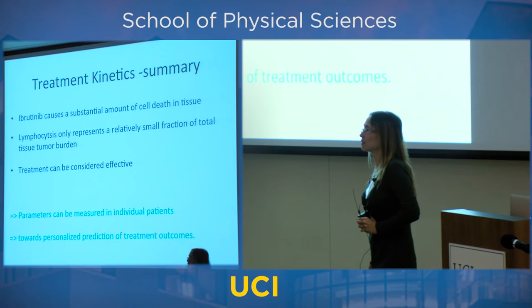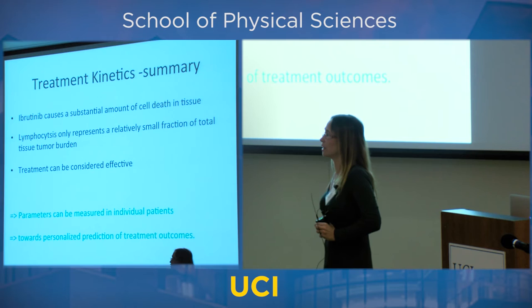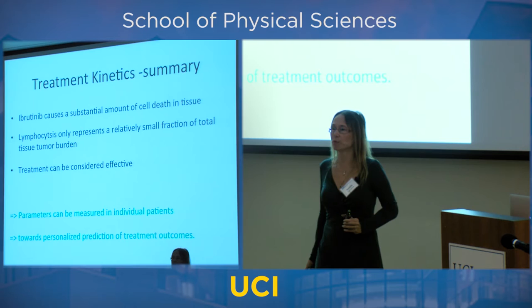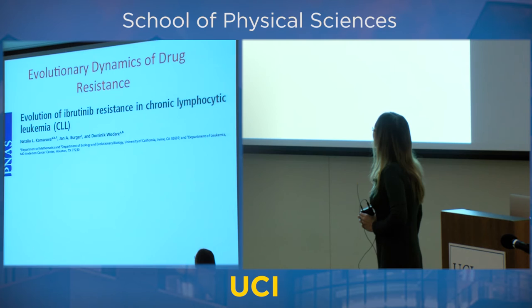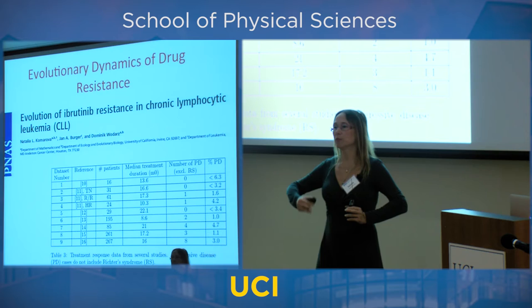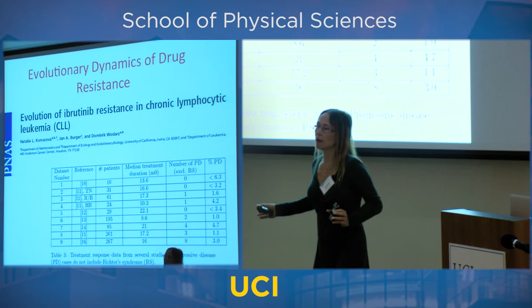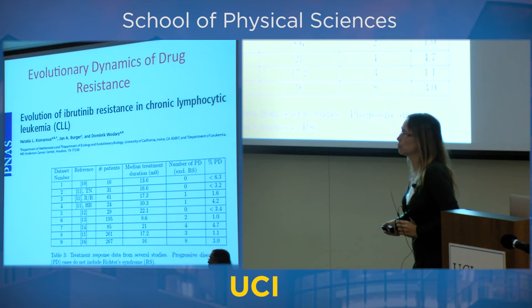The last thing I want to talk about is measuring parameters for individual patients — everybody's talking about personalized medicine. We want to treat each patient according to their own physiology and type of disease. In this paper we looked at ibrutinib long-term. At the beginning the cell count goes up then down and it seems to work, but after a while some patients' treatment fails. We listed many studies; sometimes one, two, four, or eight patients fail — the disease comes back. We wanted to look at those cases of resistance to the drug.